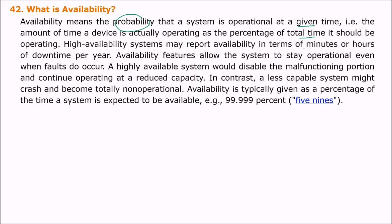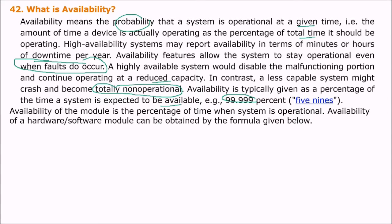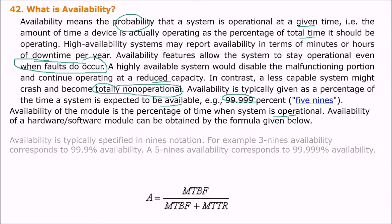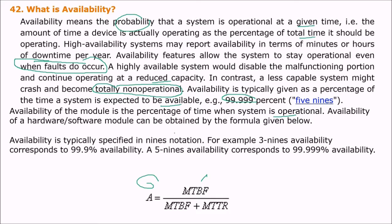High-availability systems may report availability in terms of minutes, hours, or downtime per year. Availability features allow the system to stay operational even when certain faults occur — a highly available system disables the malfunctioning portion and continues operating at reduced capacity. Availability is typically given as a percentage, such as 99.999%, expressed in nines notation. The availability formula is: MTBF divided by (MTBF plus MTTR).